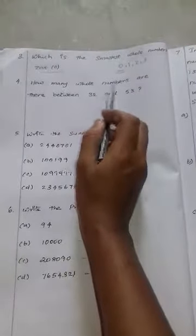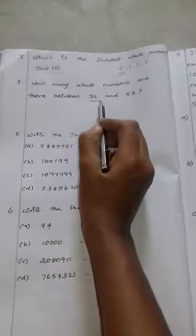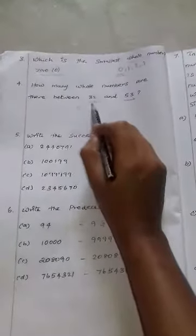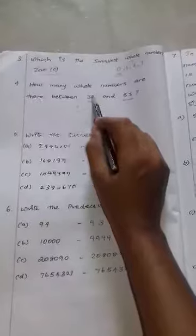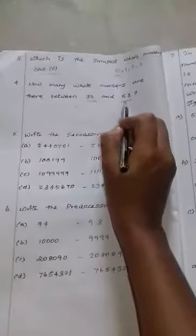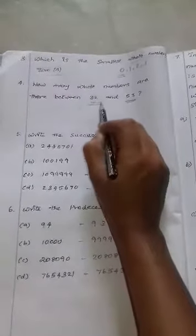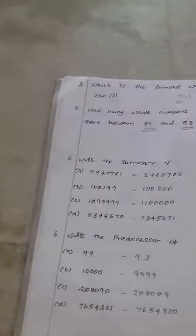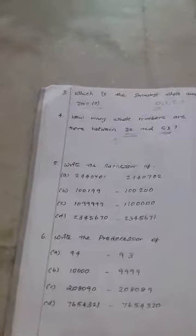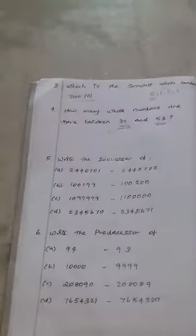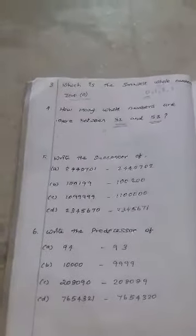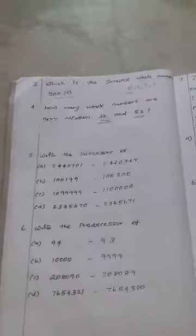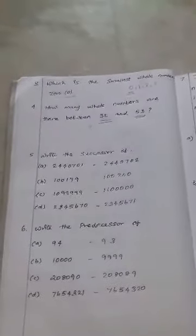Next problem: how many whole numbers are there between 32 and 53? This is your homework. Just think about what whole numbers fall between 32 and 53 and write the answer.